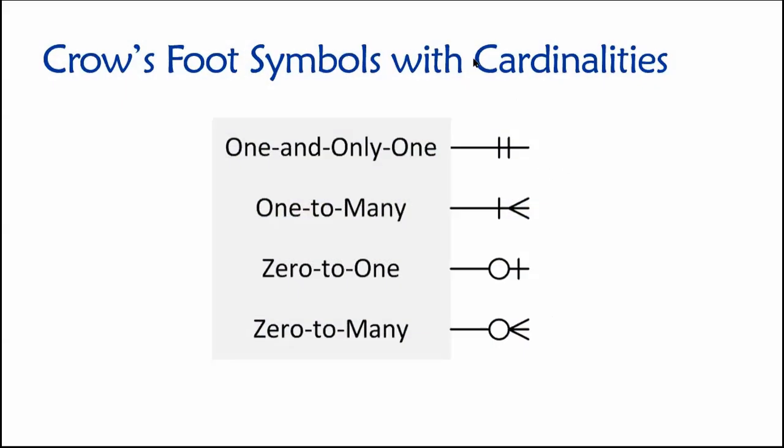Okay. So finally, now that we have these concepts down of minimum and maximum cardinalities, we can expand our set of crow's foot symbols to reflect or to convey information about not just maximum cardinalities, but minimum cardinalities as well. So what you're seeing here are the standard set of crow's foot symbols that we will be using to convey information about the relationships between two tables for the rest of our time together. As you can see, there are only four options, so it's not overwhelming. And additionally, you can see that we only have three distinct symbols.